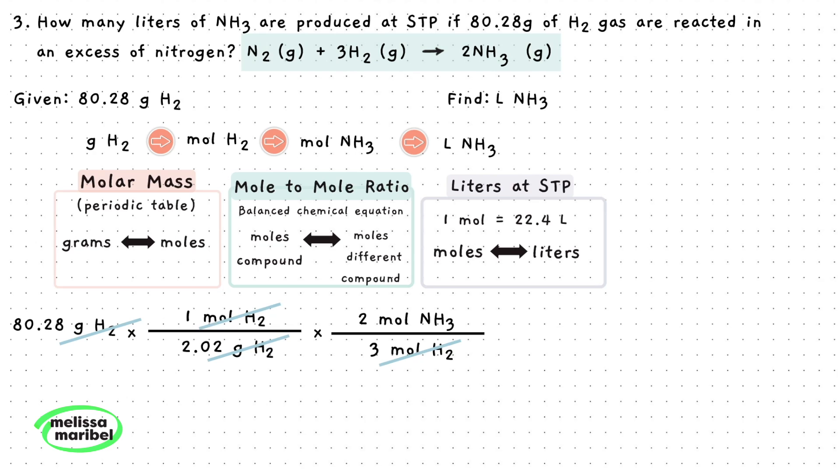The moles of H2 now cancel and we have the moles of NH3. Last part is to cancel out the moles and convert this to liters by using this conversion factor. So place the 1 mole of NH3 on the bottom so these units can cancel and place the liters on top.